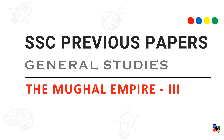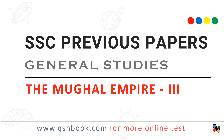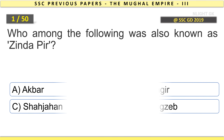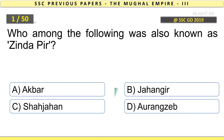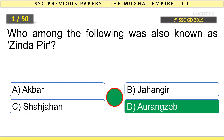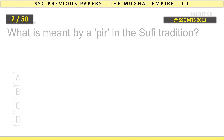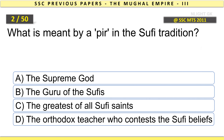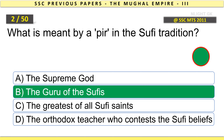The Mughal Empire, Part 3. Who among the following was also known as Zindapir? Aurangzeb. What is meant by a Pir in the Sufi tradition? The Guru of the Sufis.